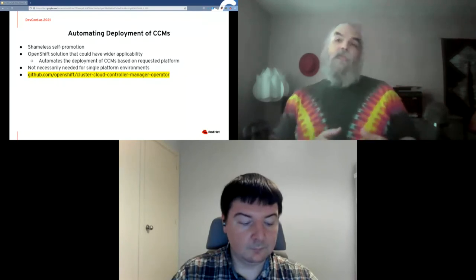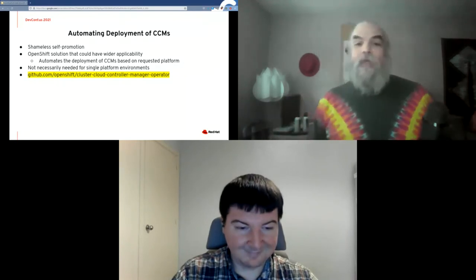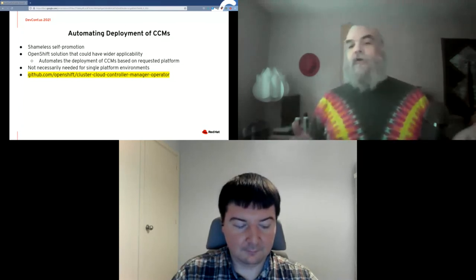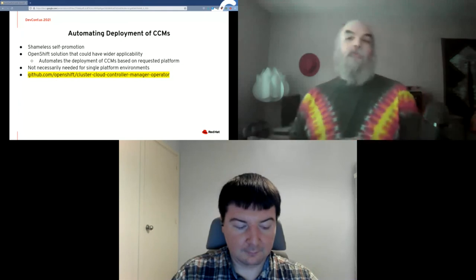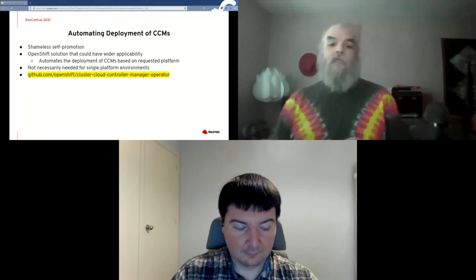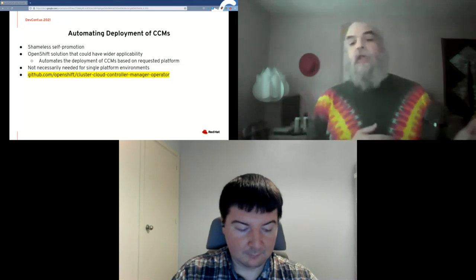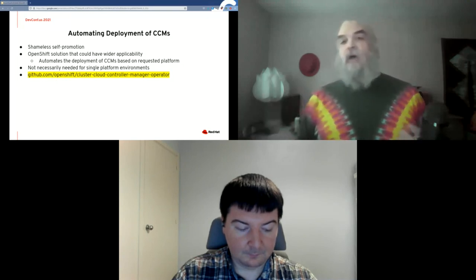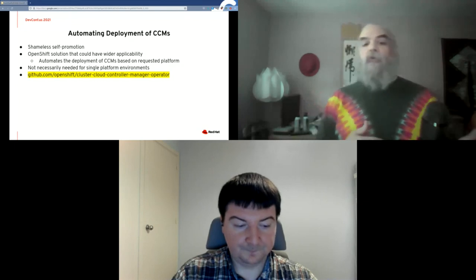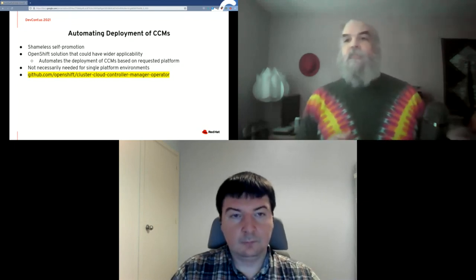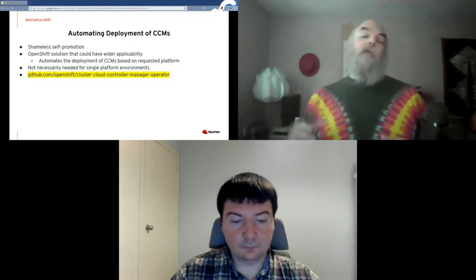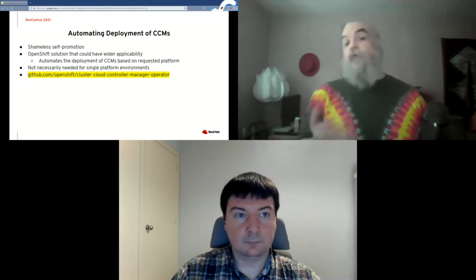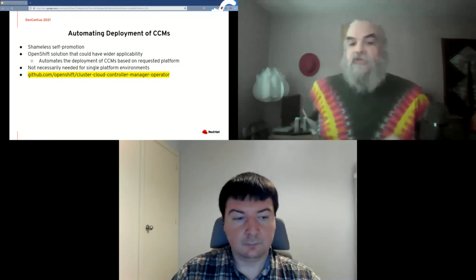A bit of shameless self-promotion: you might want to automate the deployment of your CCMs. Creating operators is a great approach for Kubernetes controllers, and on OpenShift we created an operator that can detect the platform you're on and then deploy the appropriate CCMs accordingly. If you're only working in single-platform environments you probably don't need this level of automation, but it can be very useful in multi-platform deployments. You can find a reference at the OpenShift GitHub link shown here.